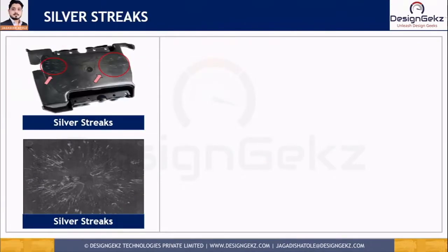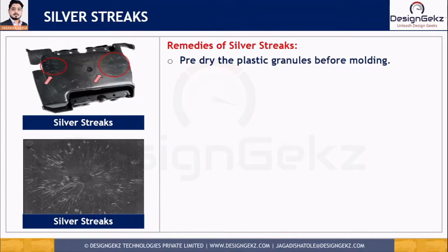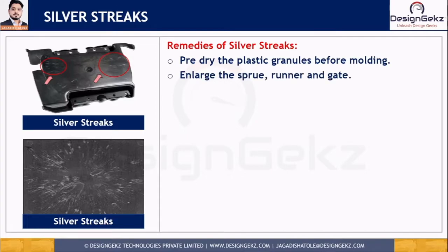To remedy silver streaks, first handle the material properly by pre-drying the plastic pellets or granules before the molding process, as pre-drying eliminates moisture content. Design modifications such as enlarging the sprue, runner, and gate area can also mitigate splay marks, since restrictive feed systems cause excessive shear heating that worsens already overheated material and leads to material degradation.